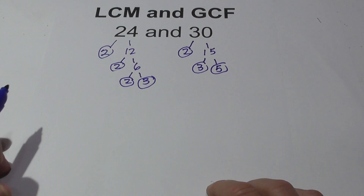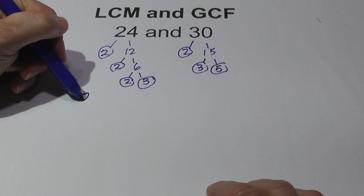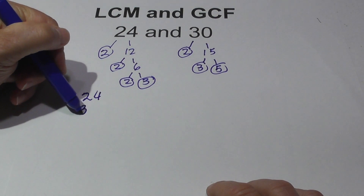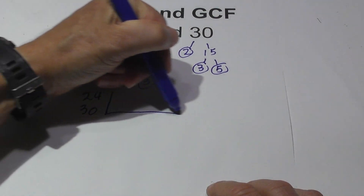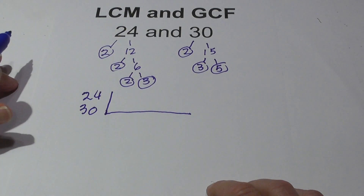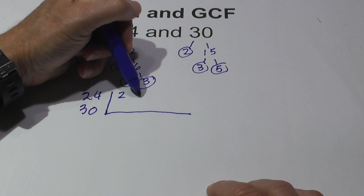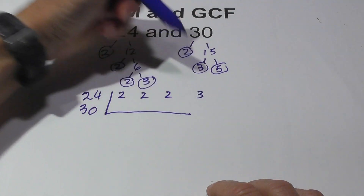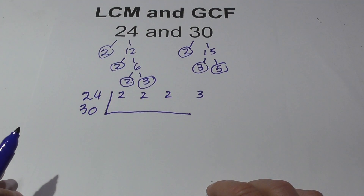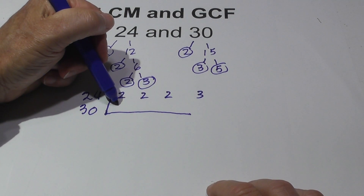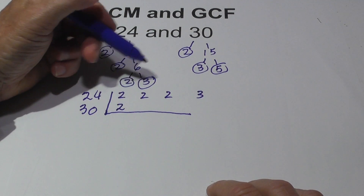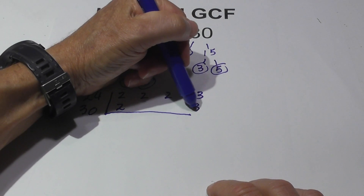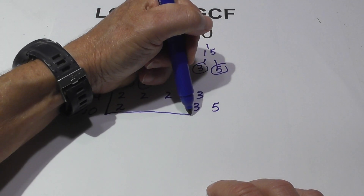Now I create a chart — it just helps keep you organized and makes it a lot easier. For 24, I'm going to write a 2, a 2, a 2, and a 3. Now for 30, I'm going to write a 2, a 3, and a 5.